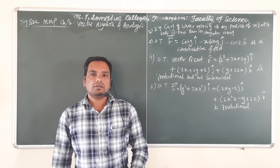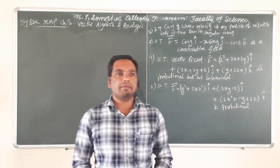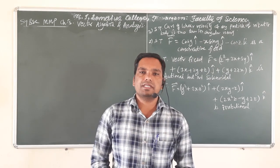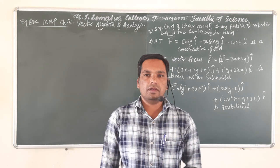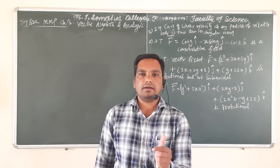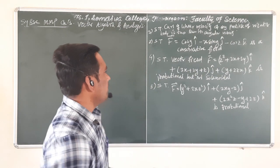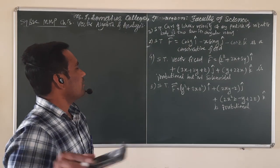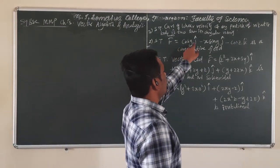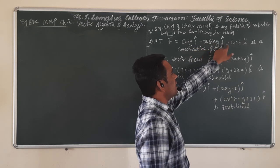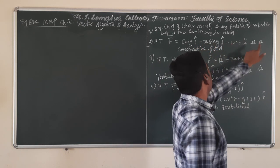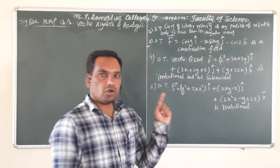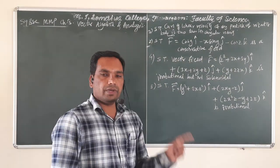Good morning students. Now we are going to solve remaining problems which are based on curl of a given vector. In the previous lecture we already solved one problem, so from that you will get ideas about how to solve the problems. Now we are solving problem number two, which is to show that vector F equals cos(y)·i cap minus x·sin(y)·j cap minus cos(z)·k cap is a conservative field.